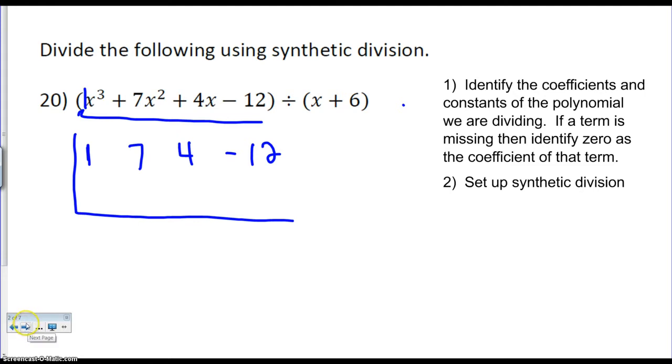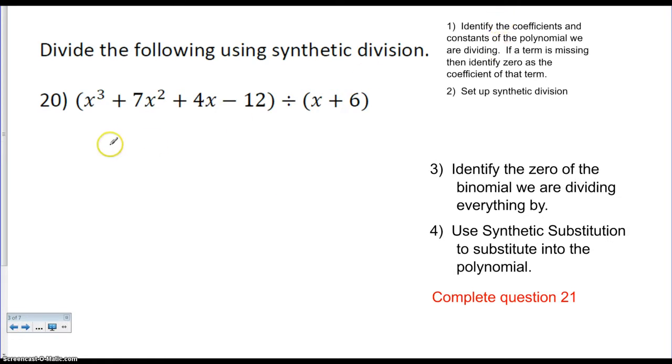So let's look at an example. Let's keep on going. Step 1. So I've set up, I've done step 1. I have a 1, 7, 4, and negative 12.